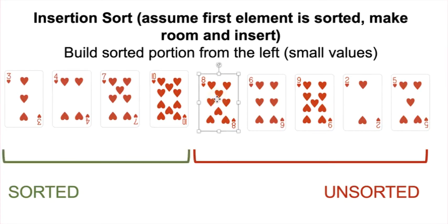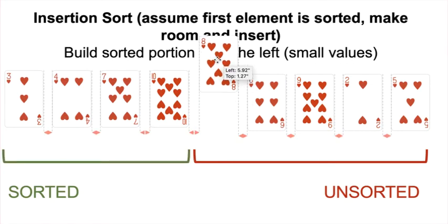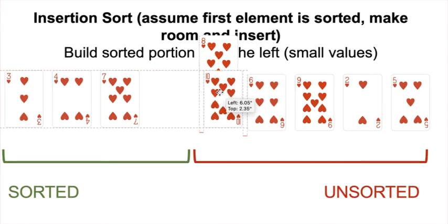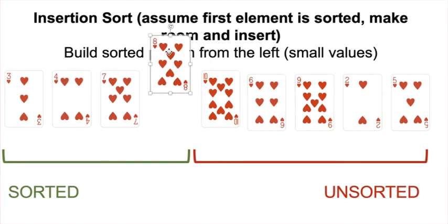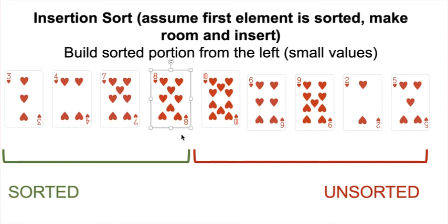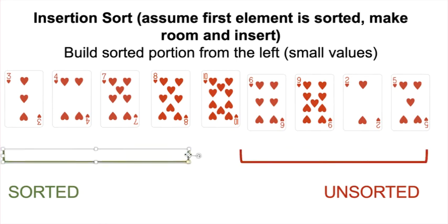Next iteration we start with the first element in our unsorted portion, which is eight. We ask is eight smaller than ten? It is, so we've got to move the ten over to make room for the eight. Is eight smaller than seven? No. So this is where we insert eight, shrinking our unsorted portion by one and growing our sorted portion by one.